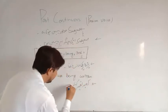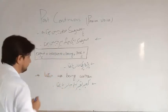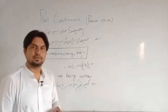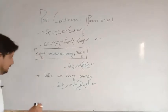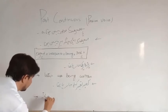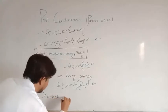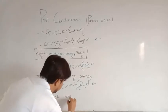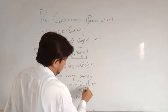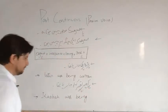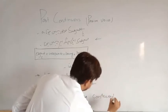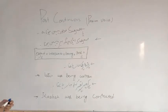اگلا جملہ: کعبہ تعمیر کیا جا رہا تھا۔ تعمیر کرنے والا کوئی نہیں ہے۔ کس کو تعمیر کیا جا رہا ہے؟ کعبہ کو۔ تو: Kaba was being constructed - یا built بھی ہو سکتا ہے۔ یعنی Kaba تعمیر کیا جا رہا تھا۔ Dear students, I hope you would have taken a screenshot.